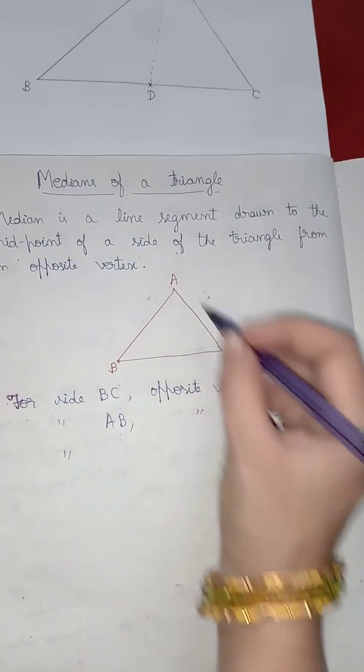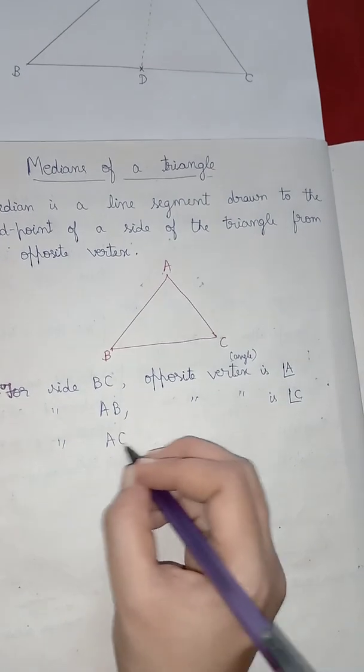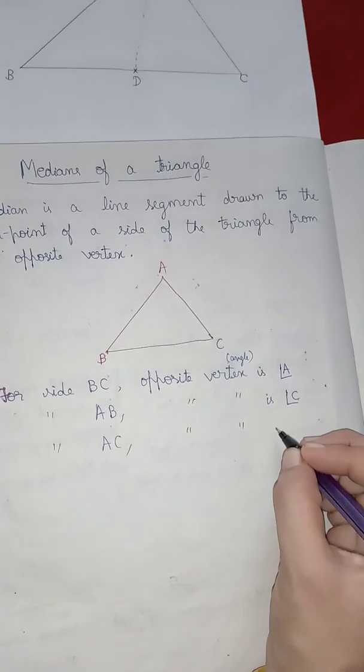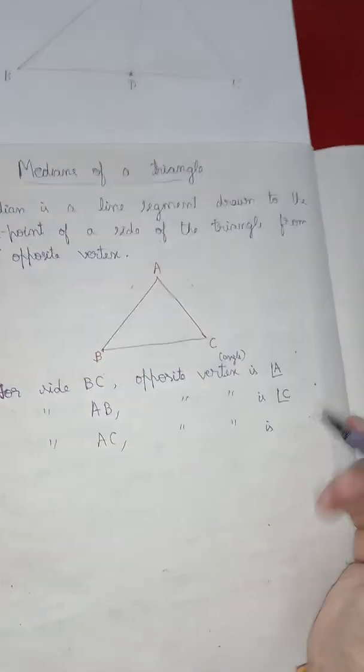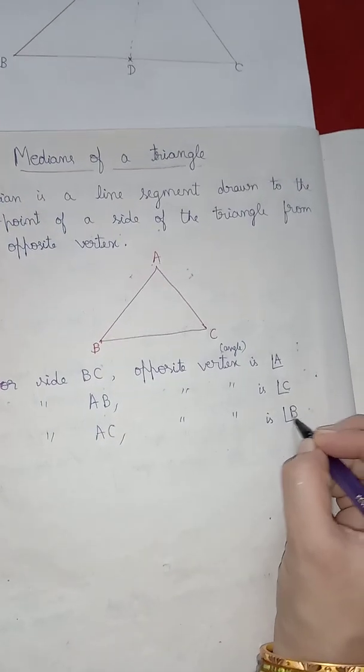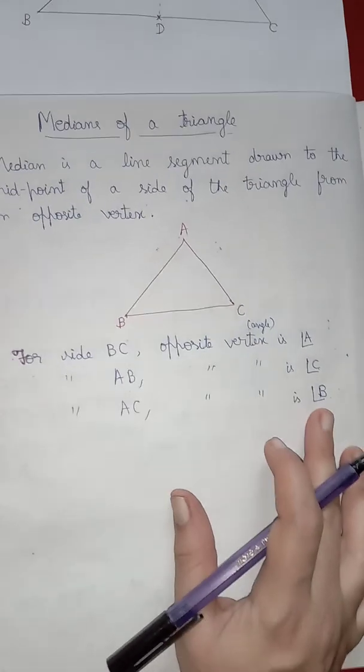Now, for side A, C, opposite vertex will be A, C. The other corner you have B. So, angle B is the opposite vertex.